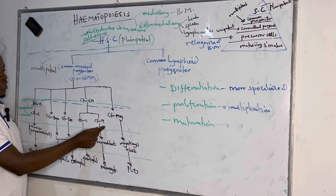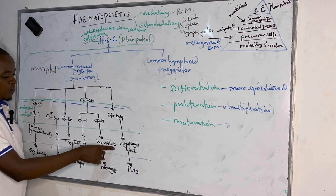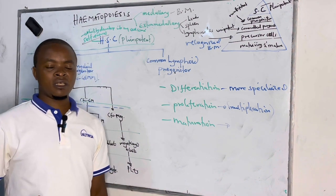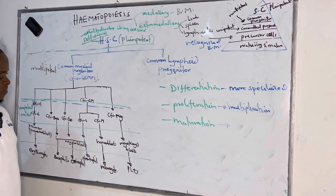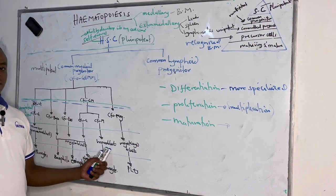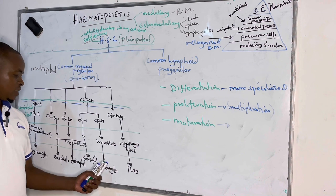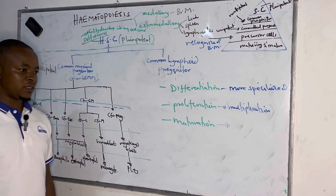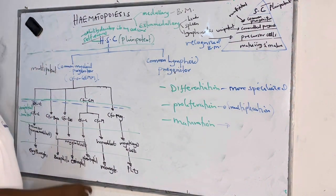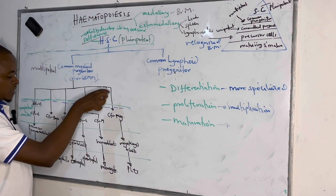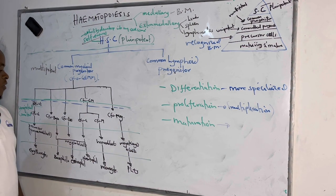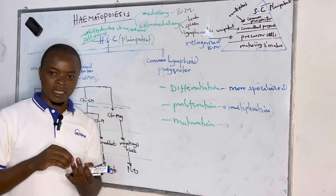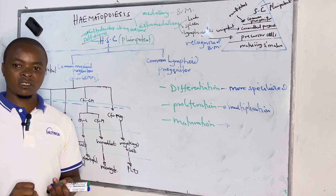The CFU-monocyte gives rise to the monoblast, which is the precursor. During monopoiesis, the first recognized stage in the bone marrow is the monoblast, which gives rise to the promonocyte, then to the monocyte. Notably, in monopoiesis, as the cells mature, the cell size increases — unlike granulopoiesis and erythropoiesis, where as the cell matures, the size keeps decreasing and the nucleus condenses.